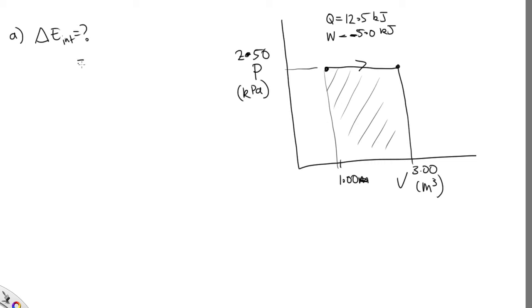Change in internal energy according to the first law is just the sum of these. So it's 12.5 minus 5.0. This will be in kilojoules. And that is equal to 7.50 to three significant figures, kilojoules.